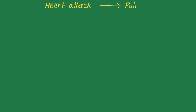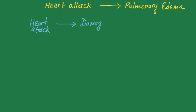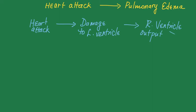Let's imagine that you are treating a patient who has recently suffered a heart attack and now has pulmonary edema. Let's see how a heart attack can lead to pulmonary edema. The heart attack may have affected the left side of the heart, so the left side is damaged. Damage to the left ventricle would lead to the right ventricular output being greater than the left ventricular output — essentially, unequal stroke volume.